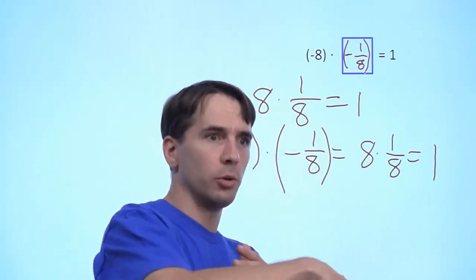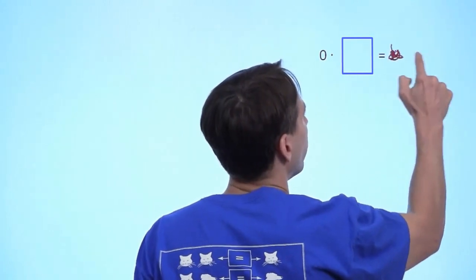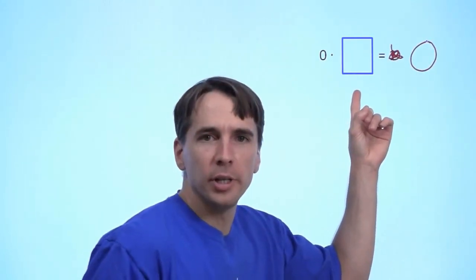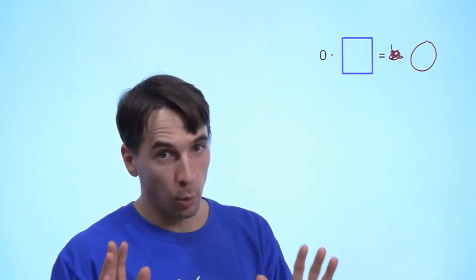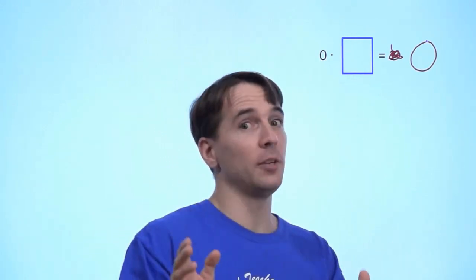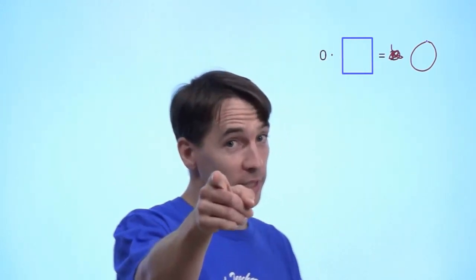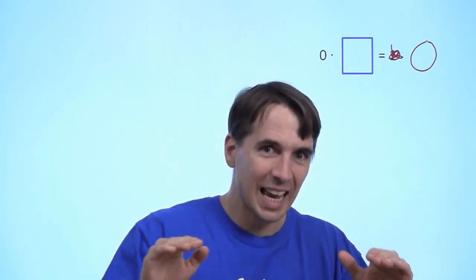We know how to deal with negatives, the reciprocal of the reciprocal, and 1. How about 0? If I multiply anything by 0, I get 0 — it doesn't matter what I put in the box, I'm always going to get 0, never 1. We can't take the reciprocal of 0. There are very few rules in math about what you can't do, and this is one of them. You can't take the reciprocal of 0. Bad things happen if you try.